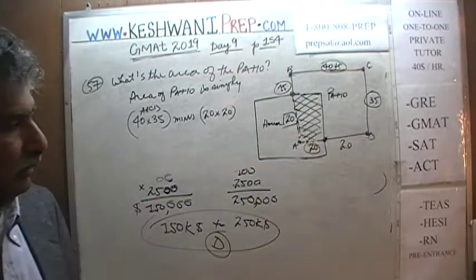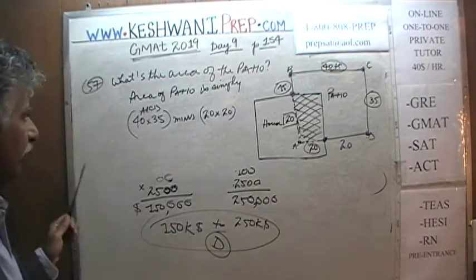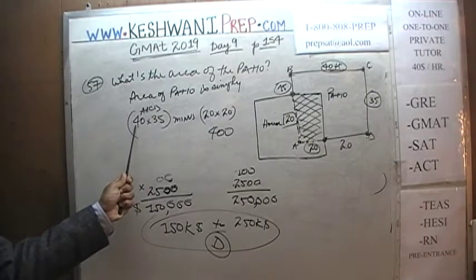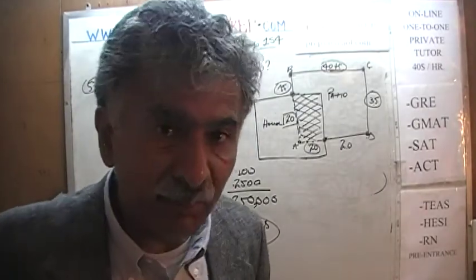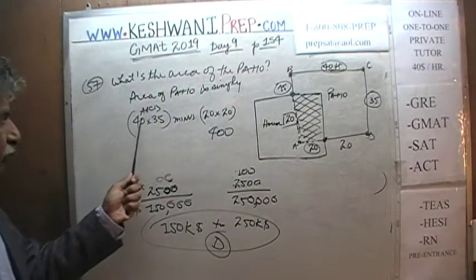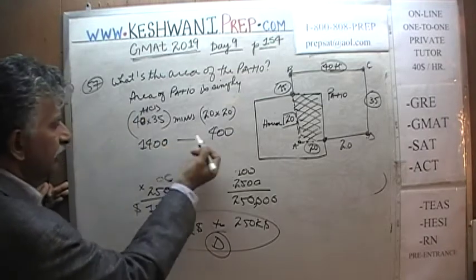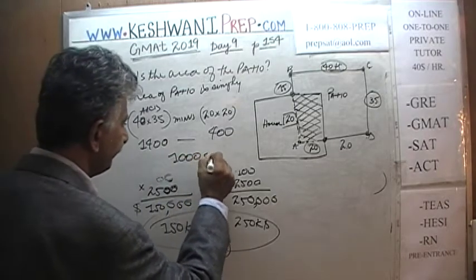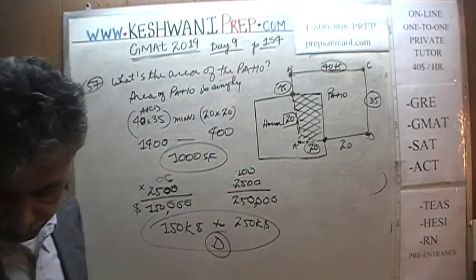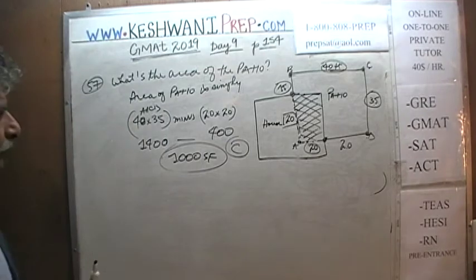The patio area is whatever is left over. We take the area of rectangle ABCD — which is 40 by 35 — and subtract the house portion, which is 20 by 20. 20 by 20 is 400. For 40 times 35: 2 times 35 is 70, 4 times 35 is 140, so 40 times 35 is 1400. 1400 minus 400 is 1000 square feet. They built a nice patio of 1000 square feet. That is answer choice C.